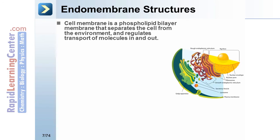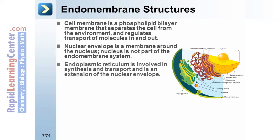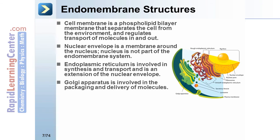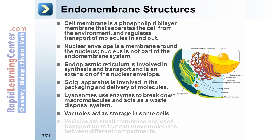Endomembrane structures: The cell membrane is a phospholipid bilayer membrane that separates the cell from the environment and regulates transport of molecules in and out. The nuclear envelope is the membrane around the nucleus; the nucleus itself is not part of the endomembrane system. The endoplasmic reticulum is involved in synthesis and transport and is an extension of the nuclear envelope. The Golgi apparatus is involved in packaging and delivering molecules. Lysosomes use enzymes to break down macromolecules and act as a waste disposal system. Vacuoles act as storage in some cells. Vesicles are small membrane-enclosed transport units that can move molecules between different compartments.